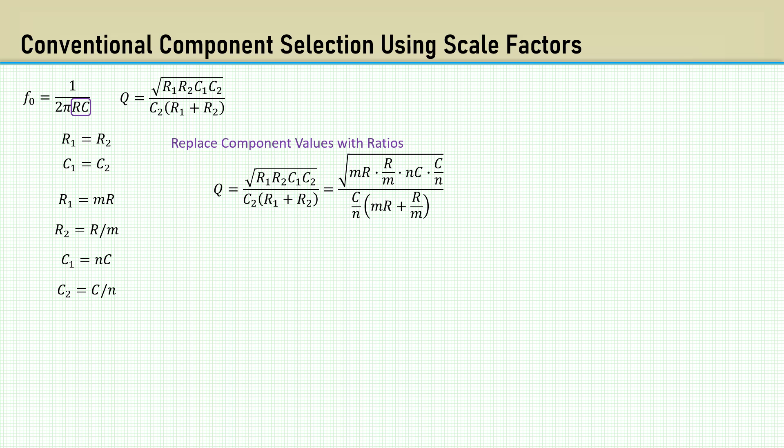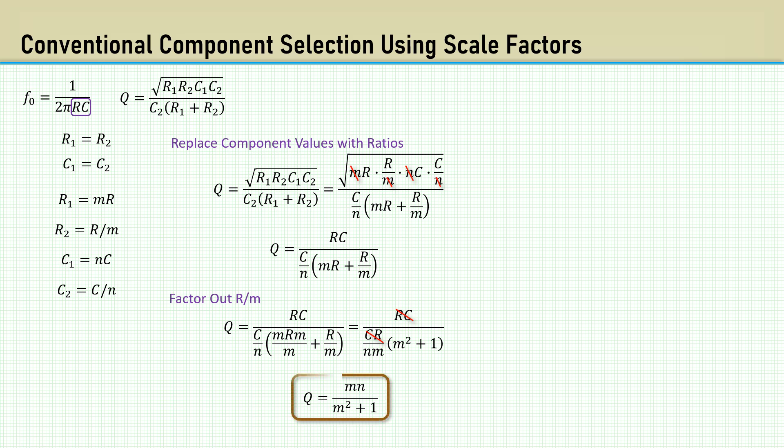We can manipulate this to get an equation that relates the scaling factors to the desired Q. We get a few cancellations under the radical. Factor out R over M, and we get this nifty equation for Q. The approach is to set one of the scaling factors to an arbitrary value and use the equation to solve for the other.